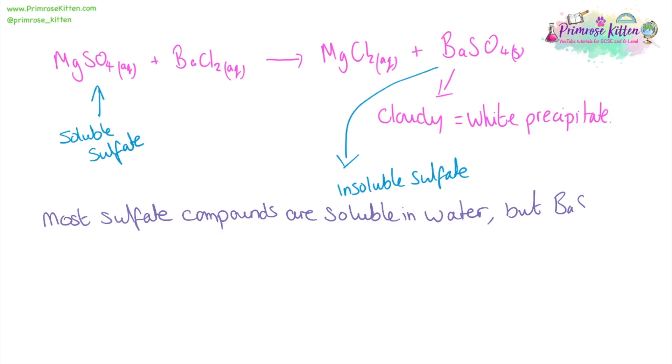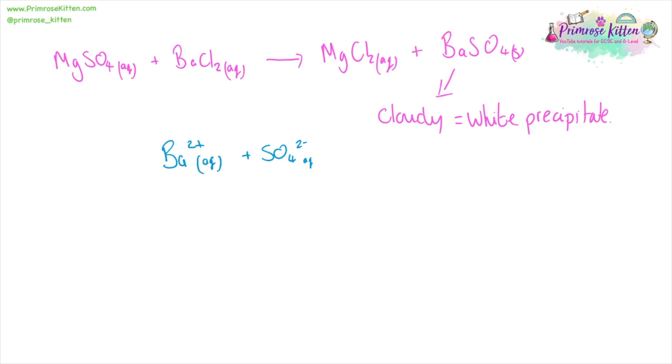Most sulfate compounds are soluble in water except barium sulfate. The ionic equation that you need to know for this is Ba²⁺ + SO₄²⁻ → BaSO₄.